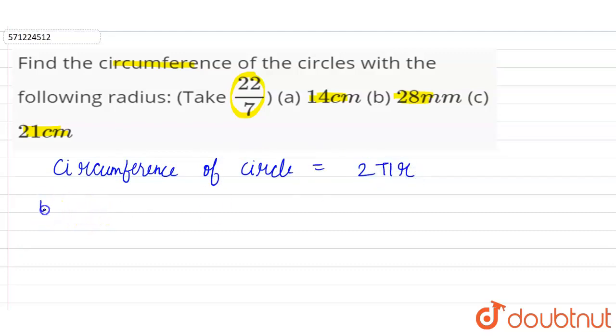Now in the first part, it is given that we have to take the radius as 14 cm. So 2 × π = 2 × 22/7, and radius is 14 cm. Right?